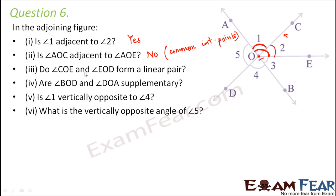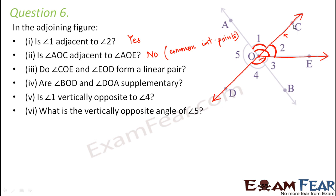Do angle COE and angle EOD form a linear pair? COE is angle 2 and EOD is this angle. We are basically talking about these three rays and whether this angle and this angle form a linear pair. Yes, they form a linear pair. Angle 2 plus this angle equals 180 degrees. Moreover, they are also adjacent angles — they have a common vertex, a common arm, and do not share common interior points. Therefore, yes, they form a linear pair.